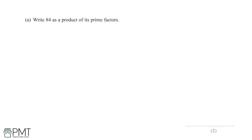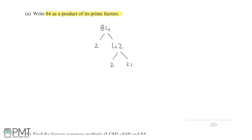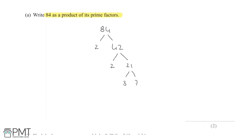We are asked to write 84 as a product of its prime factors for two marks. Using a factor tree: 84 = 2 × 42 = 2 × 2 × 21 = 2 × 2 × 3 × 7. You get one mark for a complete method to find the prime factors and a second mark for writing the answer in the correct format: 2 × 2 × 3 × 7.